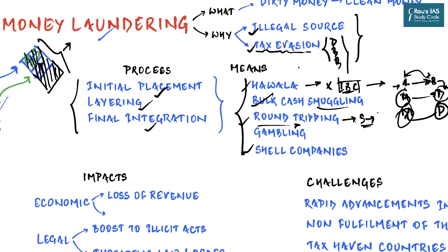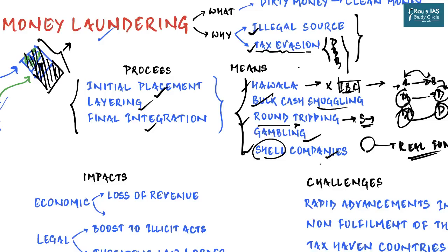Black money goes to a shell company in a tax haven like the Cayman Islands. That company invests into various companies in India, making it look like foreign investment when it is actually illegitimate money from India. Then there is gambling, and finally shell companies — businesses that have large amounts of financing but are not directly involved in any specific enterprise, selling no goods or services. They only have paperwork and no real operations, and use their finances to invest in other typically legitimate businesses.